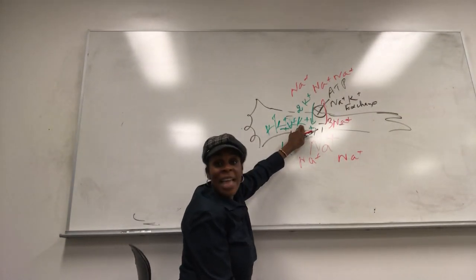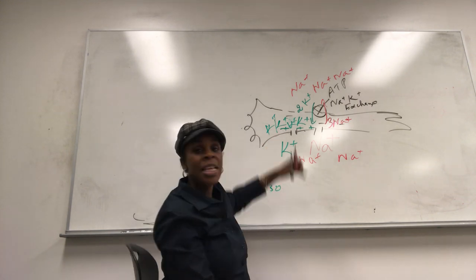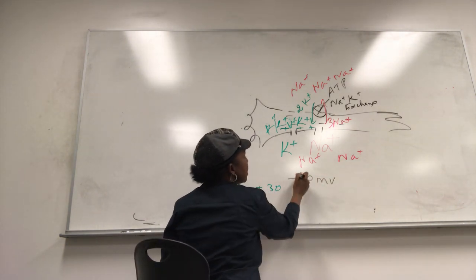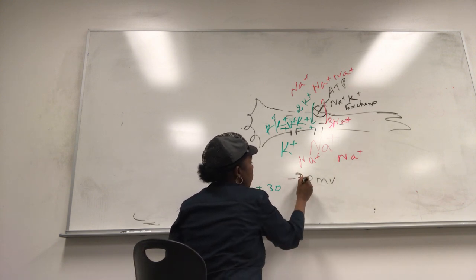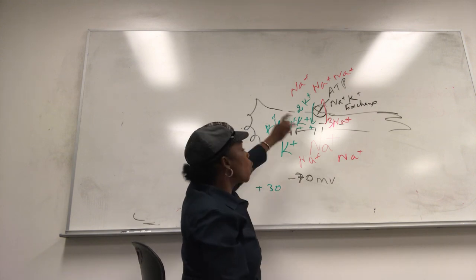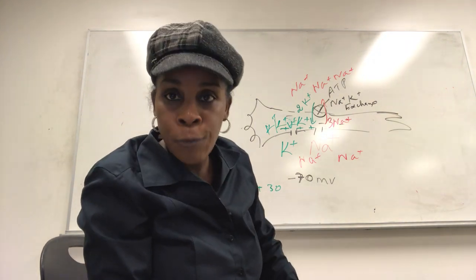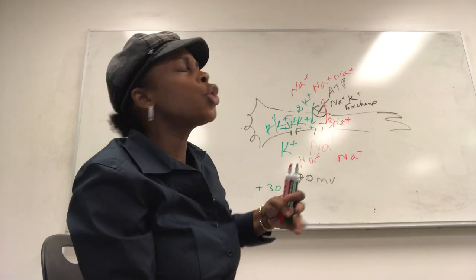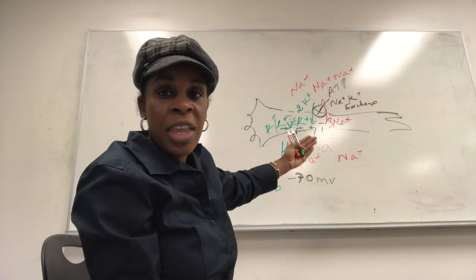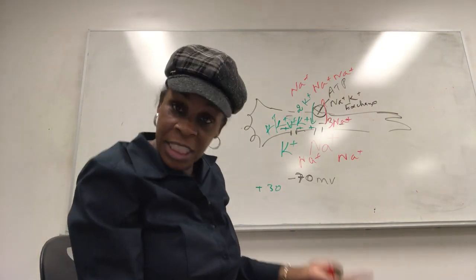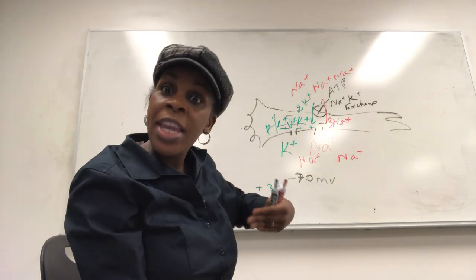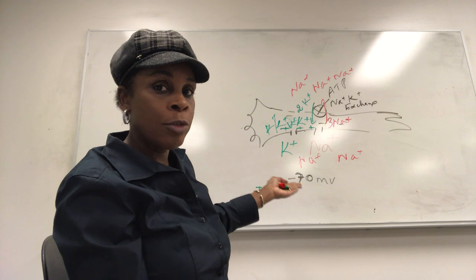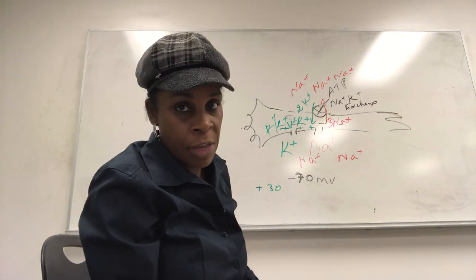When sodium comes in, the resting membrane potential starts at negative 70 millivolts — meaning the inside is more negative than the outside by 70 millivolts. As sodium comes in, it rises: minus 60, minus 50, minus 40, minus 30, minus 10, zero, then plus 10, plus 20, plus 30. When it reaches plus 30, the inside is so positive that sodium cannot come in anymore. At that point, potassium leaks out — since potassium is positive and coming out, you make the cell less positive: plus 20, plus 10, zero, negative 10, negative 20, negative 40, up to negative 90, and then back to negative 70. We'll explain more in another video.